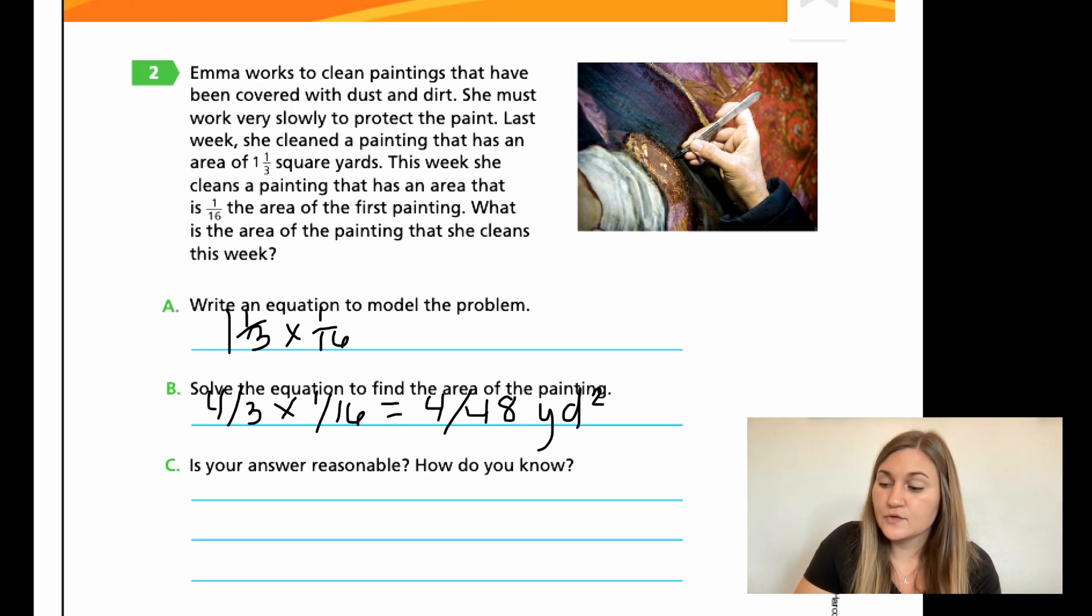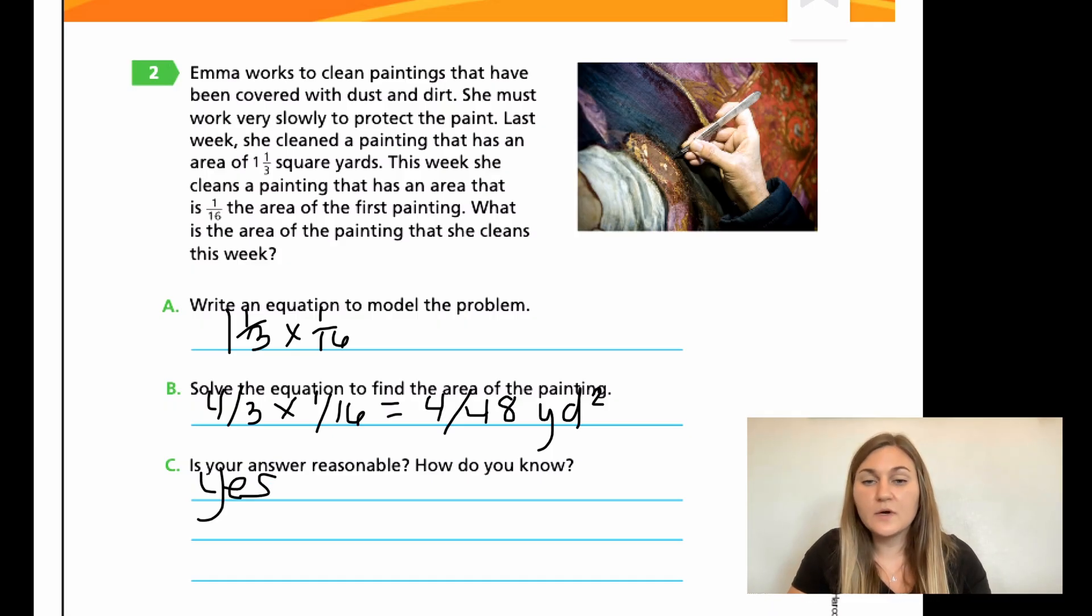And then C, is my answer reasonable? My answer is reasonable, so I'm going to put yes, because I had 1 1/3, and then I multiplied it by 1/16th. I started with just over 1, and I multiplied it by a really small fraction. So my answer should be pretty small, and it should definitely be less than 1. So if my answer were like 300, that's not a reasonable answer, because you're multiplying 1 by a fraction. So since my answer is 4 out of 48, it's a very small fraction, it is going to be reasonable. So I'm going to say yes, because it's less than 1.